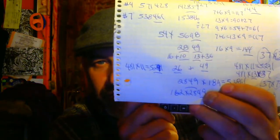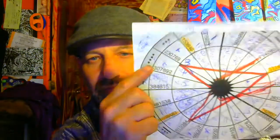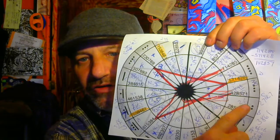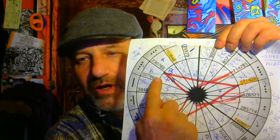54 times 56.98 equals 307,692. 54 times 52.91 equals 285,714. This one is in the second spot. This one is in the fourth spot. So all the numbers — 27, 5481.